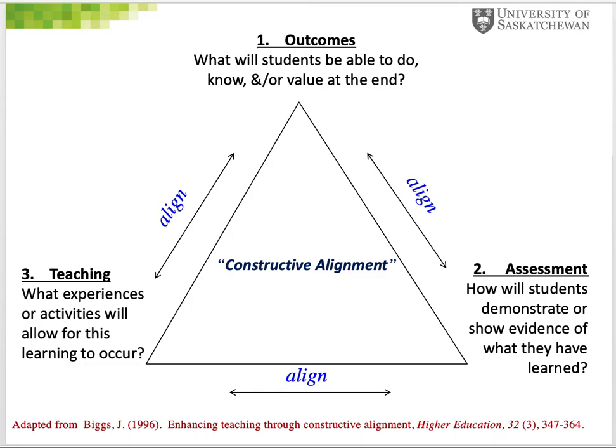In short, constructive alignment is a process of starting with the outcomes we intend for students and aligning the teaching and assessment to those outcomes.